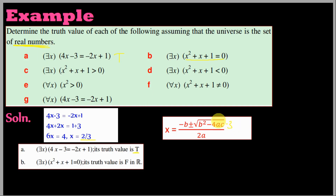Since the discriminant is less than zero, there is no real value of x satisfying this equation. The truth value is FALSE.